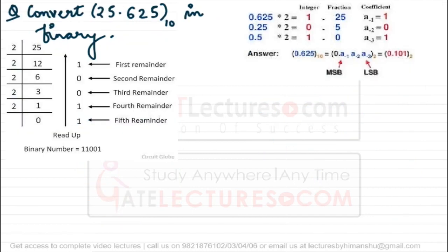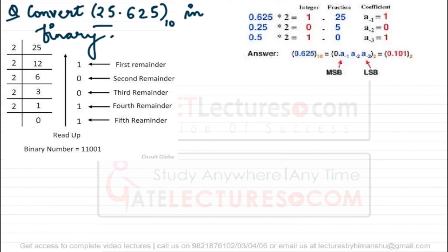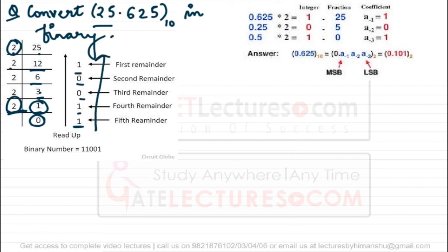Let us look at an example: convert 25.625 in binary. First, look at the integral part 25. We divide it repeatedly by 2. Divide 25 by 2: quotient 12, remainder 1. Divide 12 by 2: quotient 6, remainder 0. Divide 6 by 2: quotient 3, remainder 0. Divide 3 by 2: quotient 1, remainder 1. 1 divided by 2: quotient 0, remainder 1. Reading remainders from bottom to top, the binary equivalent of 25 is 11001.